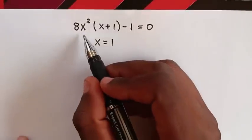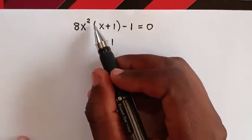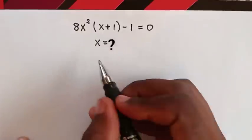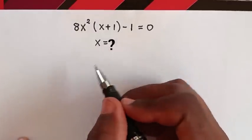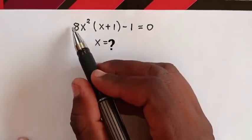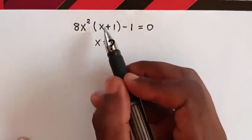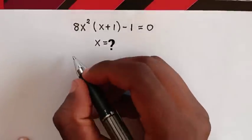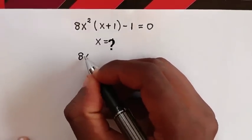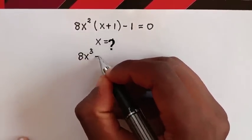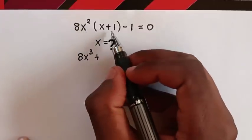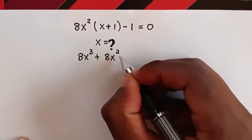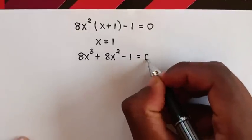Hello. How to solve 8x squared bracket (x plus 1) bracket minus 1 equals 0, to find the value of x. So we multiply 8x squared inside the bracket. So it will be 8x squared times x is 8x cubed, plus 8x squared times 1 is 8x squared, minus 1 is equal to 0.